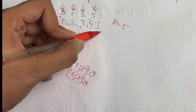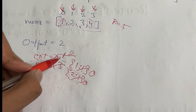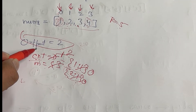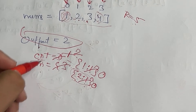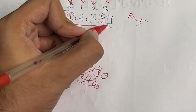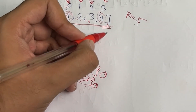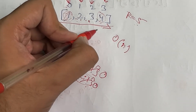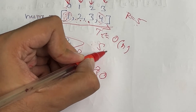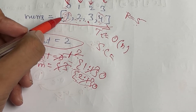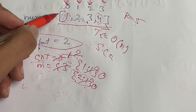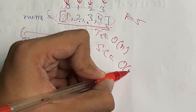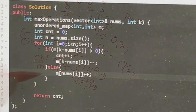All elements are traversed and the answer is two, which is the expected output. The time complexity is O(n) because we traverse the array only once. The space complexity is also O(n) since in the worst case all values are stored in the map.